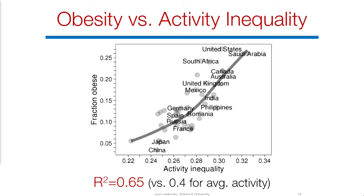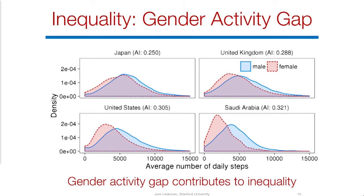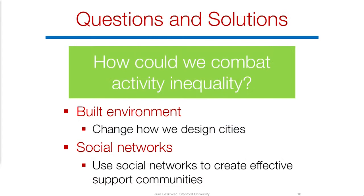The question is: what is the source of this activity inequality? We also have gender data, so we can look at how activity is distributed across the two genders. In Japan, where activity inequality is small, men and women get about the same amount of activity. In countries where activity inequality is large, like the United States or Saudi Arabia, females are the vulnerable part of the population — their activity drops by about 50%, while male activity drops by only about 30%.